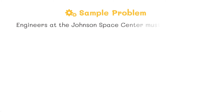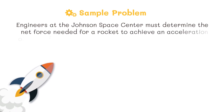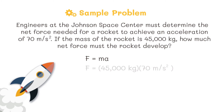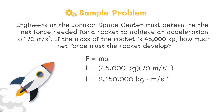Here is a sample problem computing for force. Engineers at the Johnson Space Center must determine the net force needed for a rocket to achieve an acceleration of 70 meters per second squared. If the mass of the rocket is 45,000 kilograms, how much net force must the rocket develop? Using the formula force equals mass times acceleration: 45,000 kilograms multiplied by 70 meters per second squared gives us 3,150,000 kilogram meters per second squared, which is also equivalent to 3,150,000 Newtons.